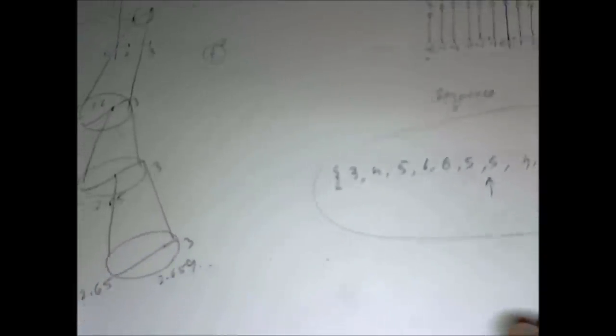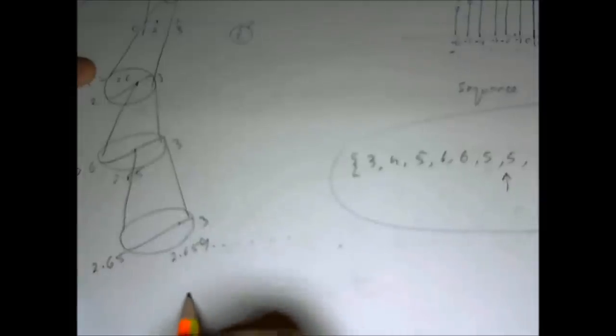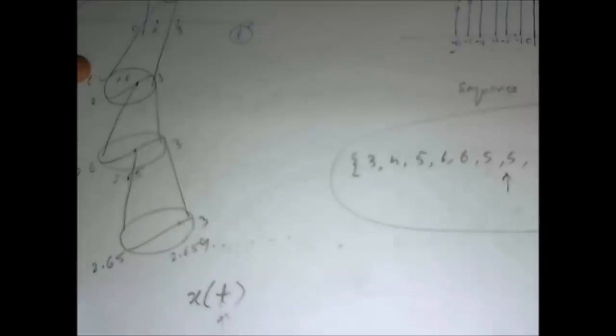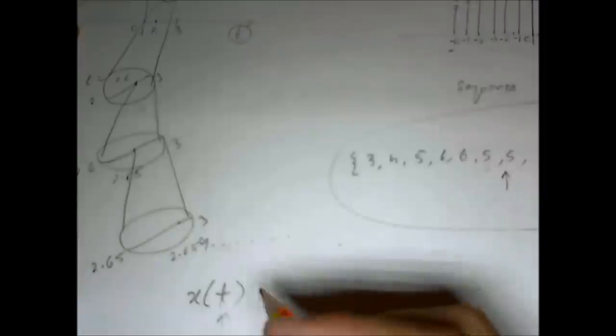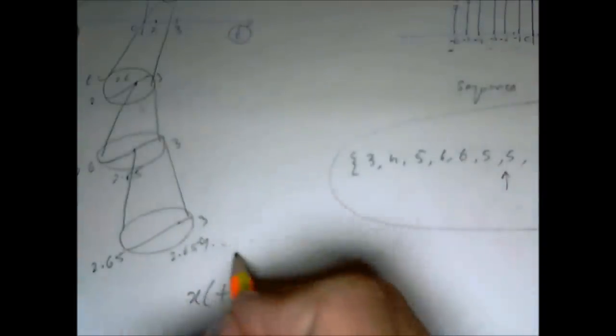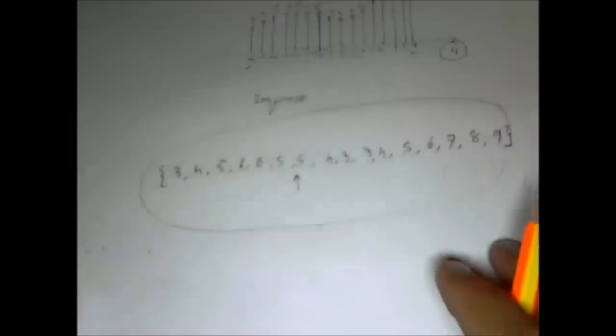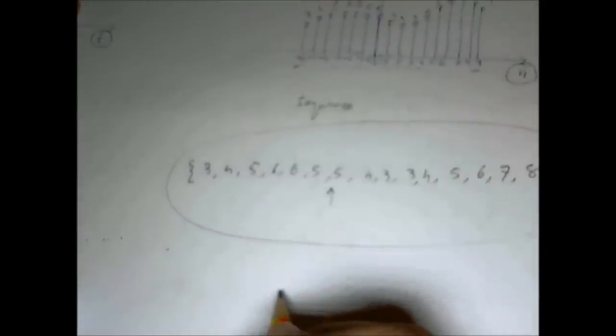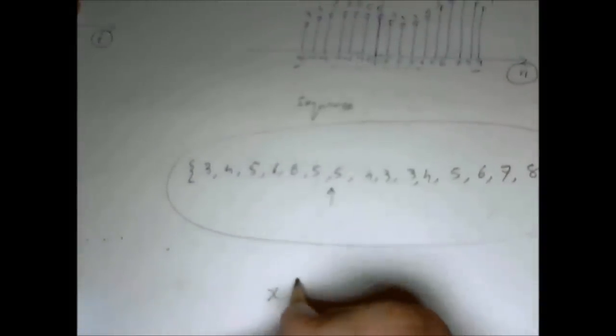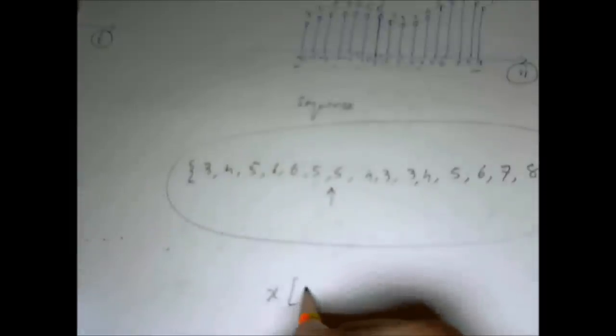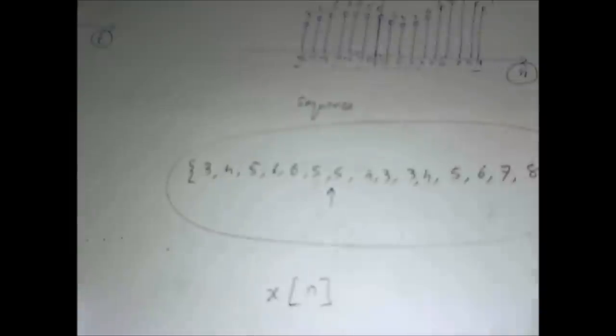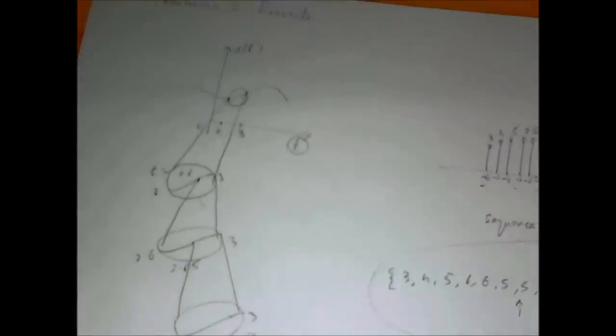We also know there is a notational difference. A continuous time signal is denoted like this - we use parentheses. The independent variable is usually T for time. However, if you are measuring, let's say, water pressure in a swimming pool, we would rather use a letter D to denote depth. But we use the same letter just for consistency. Similarly in discrete time, we use square brackets and the independent variable is N. That's the difference between continuous and discrete time.